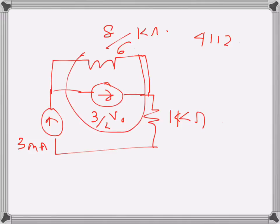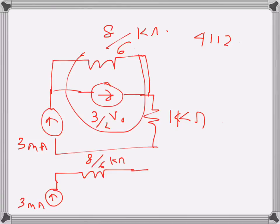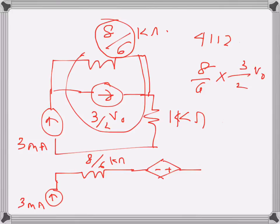Now I can convert these two back into a voltage source and a series resistance. The 3 milliamps current source gives a resistance of 8 over 6 kilo ohms, and the voltage source polarity will be minus-plus with a value of 8 over 6 times 3 over 2 V0, which simplifies to 2 V0.